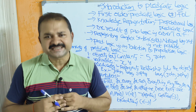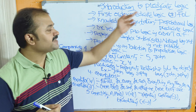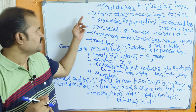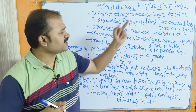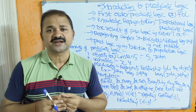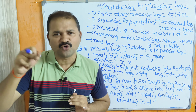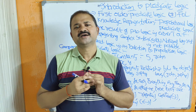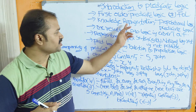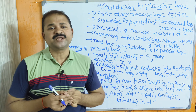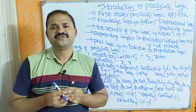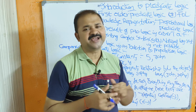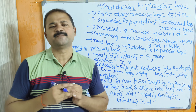Let us discuss the introduction to predicate logic in artificial intelligence. Predicate logic can also be called first order predicate logic (FOPL) or first order logic (FOL). In order to represent knowledge, we can use two techniques: propositional logic and predicate logic. We have already seen propositional logic.